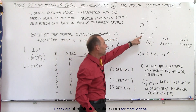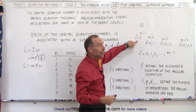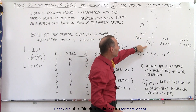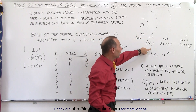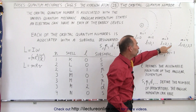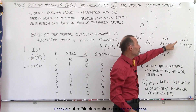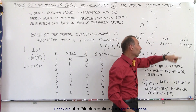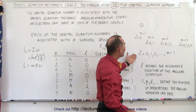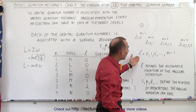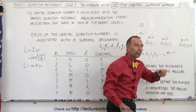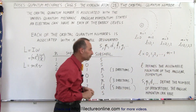When n equals 1, l can only be 0. When n equals 2, l can be 0 or 1. When n equals 3, l can be 0, 1, or 2. When n equals 4, l can be 0, 1, 2, or 3, and so forth. In other words, l can have any value up to 1 less than the principal quantum number n.